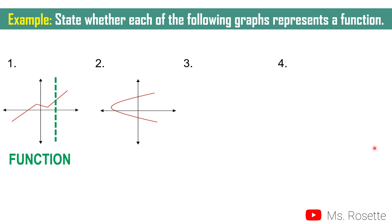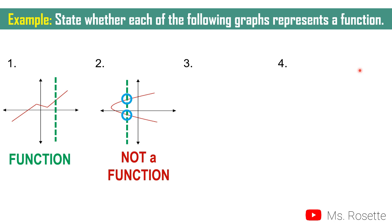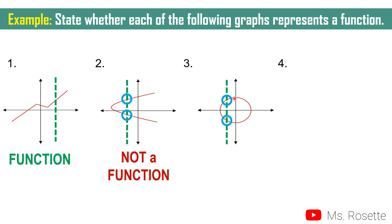Another example: draw a vertical line anywhere on this graph. This vertical line intersects with two points, so therefore this will not be considered as a function. Another: if we have a circle, draw a vertical line anywhere on this graph. As you can see, this line intersects with two points — it touches the red circle here and also here. Therefore, this is not a function.